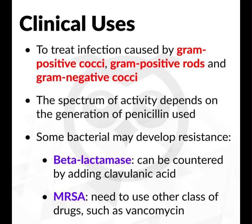Some bacteria may develop resistance. Beta-lactamase can be countered by adding clavulanic acid. For methicillin-resistant Staphylococcus aureus (MRSA), we need to use other classes of drugs such as vancomycin.